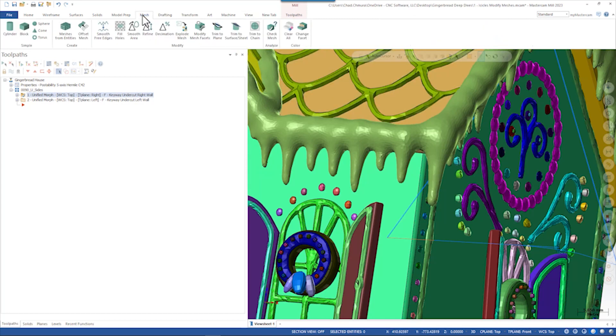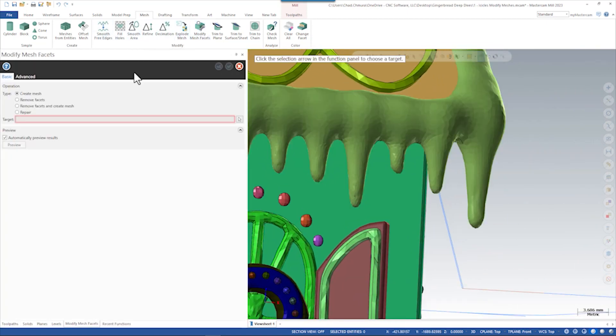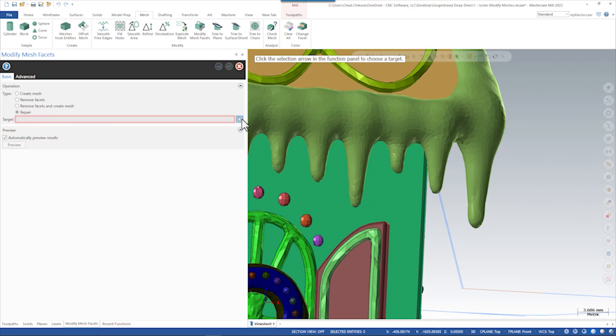In this case, what we did on the icicles that needed a lot of work was run repair mesh and we simply deleted a lot of this icicle.